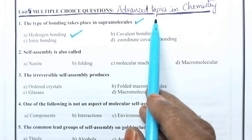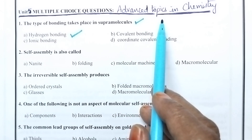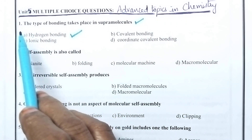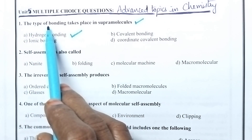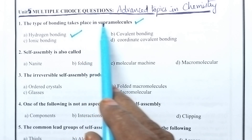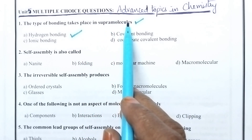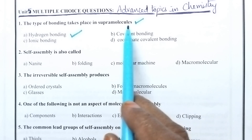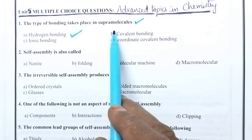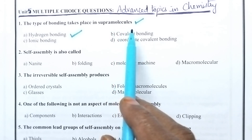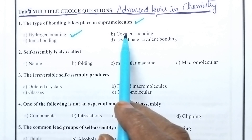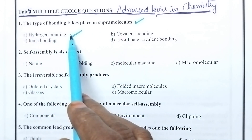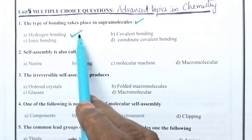Supramolecular chemistry deals with the non-covalent interactions. Coming to the first question: the type of bonding that takes place in supramolecules. Supramolecular chemistry deals with hydrogen bonding, hydrophobic forces, and van der Waals forces. Option A, that is hydrogen bonding, is the right option.